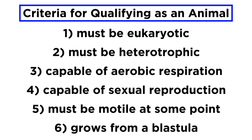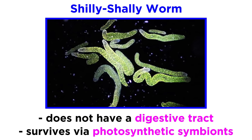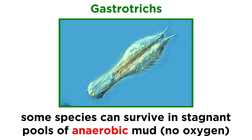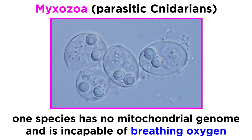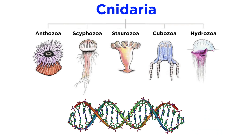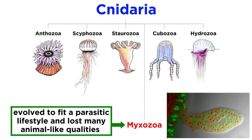Now, of course, there are a few animals that break these rules. The shilly-shally worm, for example, has no digestive tract at any point in its life, and survives entirely off of its photosynthetic symbionts. In addition, a few species of gastrotrichs are able to survive in stagnant pools of anaerobic mud. And at least one species of myxozoa, which are parasitic cnidarians, have not only lost their mitochondrial genomes, but are entirely incapable of aerobic respiration, meaning they can't even breathe oxygen. So then, how are these things animals? The answer is in their evolutionary history. Due to extensive DNA analyses, myxozoans have been determined to share recent common ancestry with the cnidarians. Their ancestor was a free-living cnidarian, almost like a miniature jellyfish, that shared all of its characteristics with other cnidarians, before their descendants, the myxozoans, evolved to fit a parasitic lifestyle.